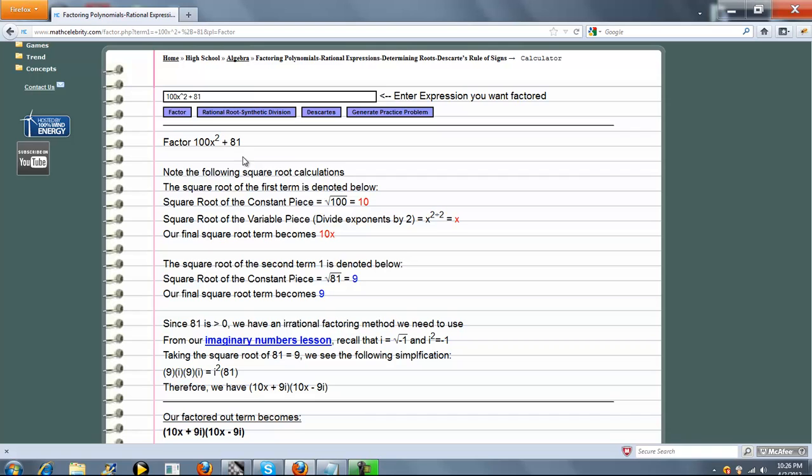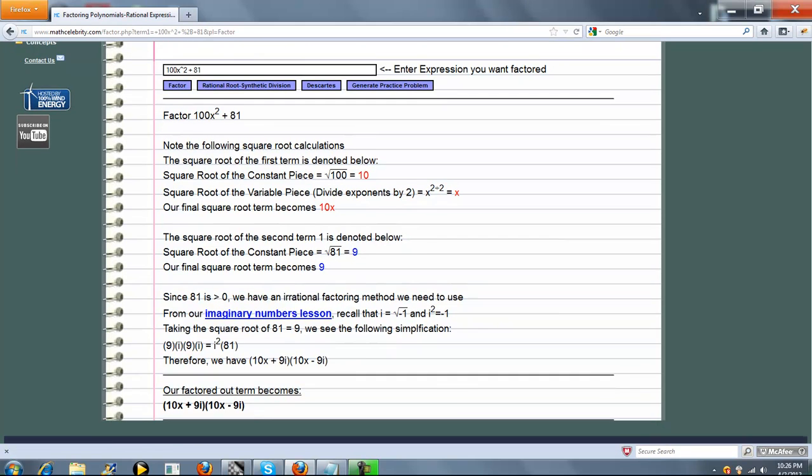Term 1 has a square root—that's 10x. Term 2 has a square root—that's 9. But now this isn't a difference of squares, it's actually the sum of squares, so we have irrational roots. Irrational meaning i, which equals square root of negative 1. So we break this down all the way using irrational roots. This factored all the way down is 10x plus 9i times 10x minus 9i, and here's how we get that.